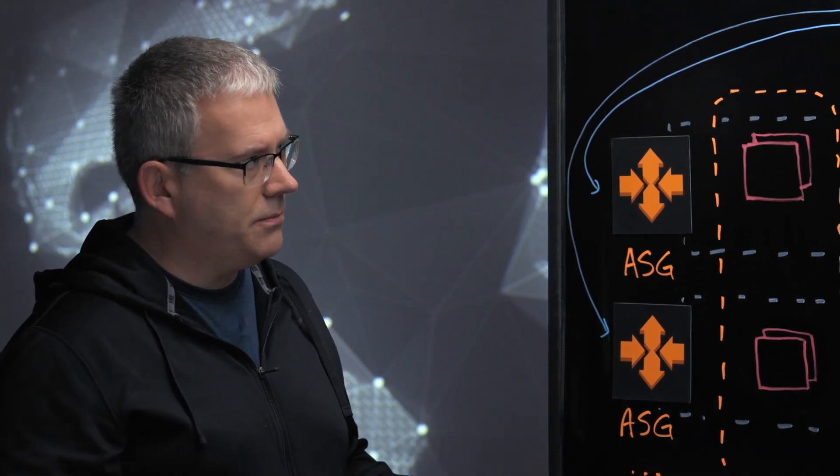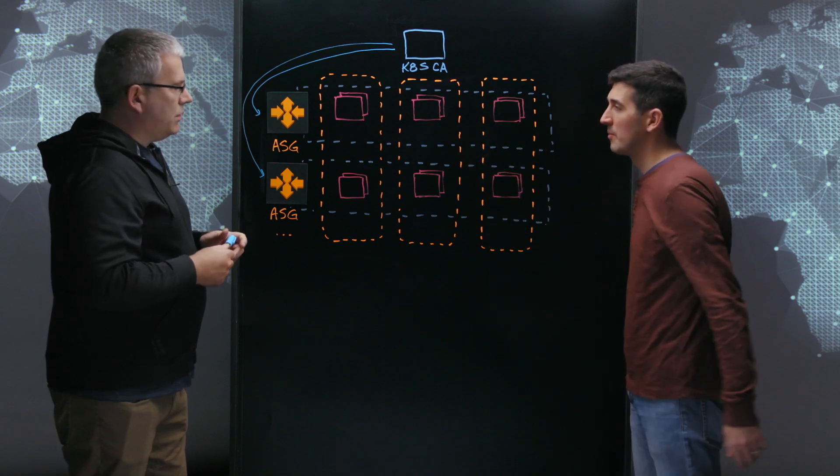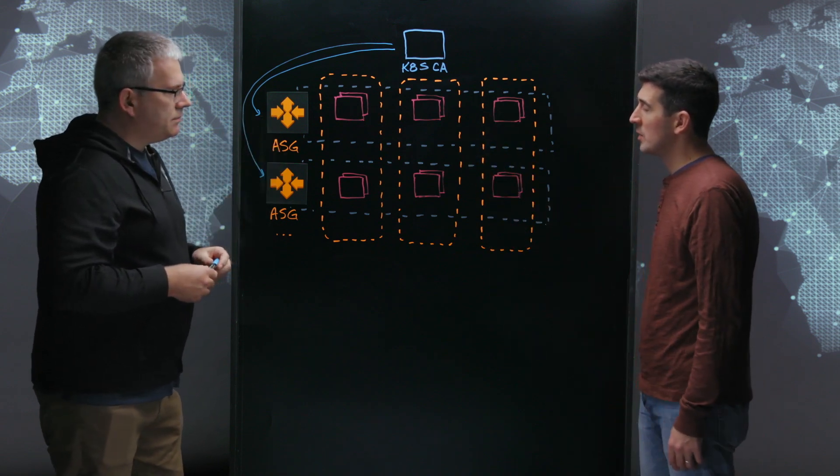And the cluster autoscaler refers to an ASG as a node group. That's how it collects instances of the same type together and presents that back to the rest of the Kubernetes infrastructure to make use. When you said desired count, you mean desired count of nodes, of EC2 instances? Yes, within an individual ASG.